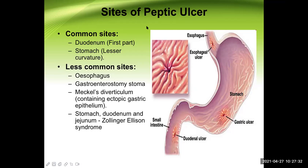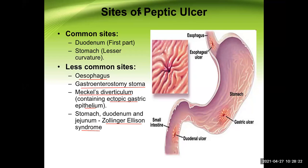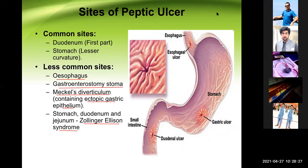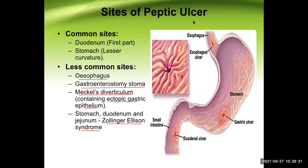Less common sites for ulcer formation include the lower end of the esophagus, gastroenterostomy stoma, Meckel's diverticulum (which contains ectopic gastric mucosa that may produce acid), and other parts of the stomach such as the greater curvature, fundus, pylorus, second, third, or fourth parts of the duodenum, or even the jejunum — especially in Zollinger-Ellison syndrome due to high gastric acid from a gastrinoma in the pancreas.